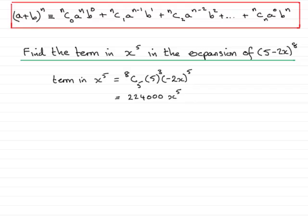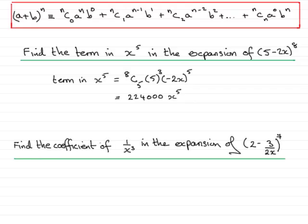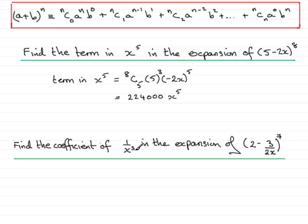Sometimes you're asked to find a coefficient, and here's another example: find the coefficient of 1 over x cubed in the expansion of (2 minus 3 over 2x) all to the power 7. A coefficient is a value in front of a particular term — for instance, in the example above, the coefficient of the term in x to the 5 is the number 224,000. So if I'm to do this particular question, I need to examine the term in 1 over x cubed.